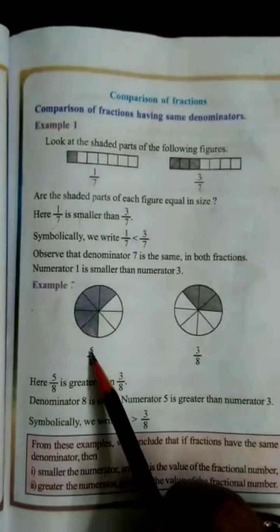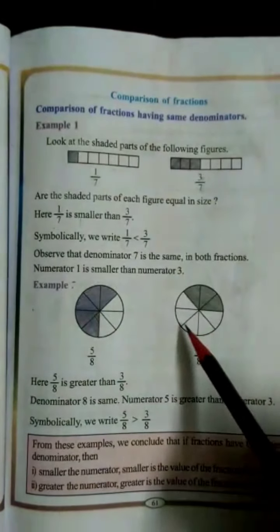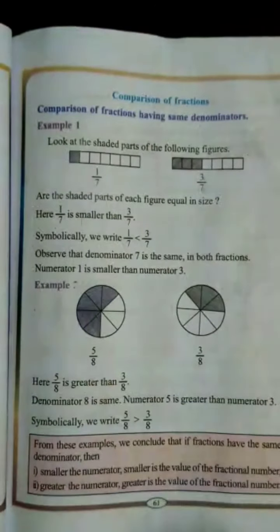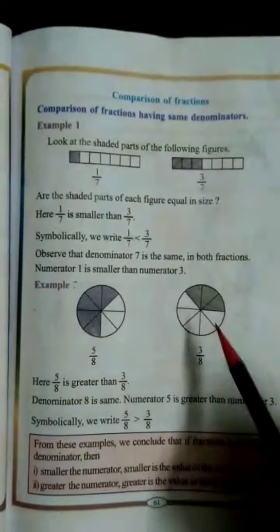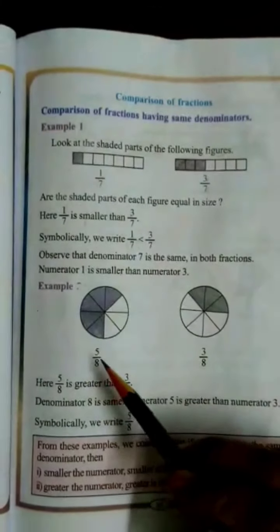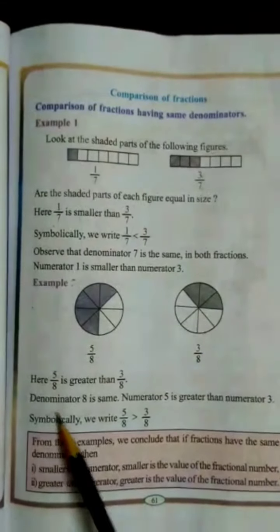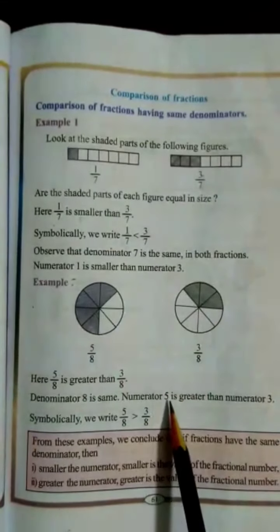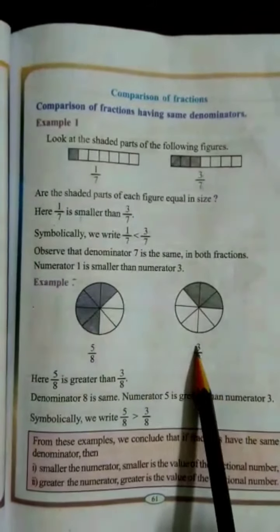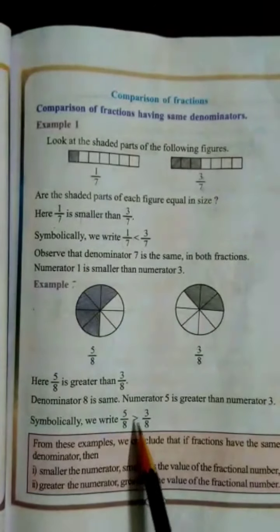Now let us take the second example. The fractions are 5 by 8 and 3 by 8. The first figure is divided into 8 parts with 5 parts shaded; the second figure is also divided into 8 parts but only 3 parts are shaded. As established, the greater numerator gives the greater value. The denominator 8 is the same, but numerator 5 is greater than numerator 3. So symbolically, 5/8 > 3/8.